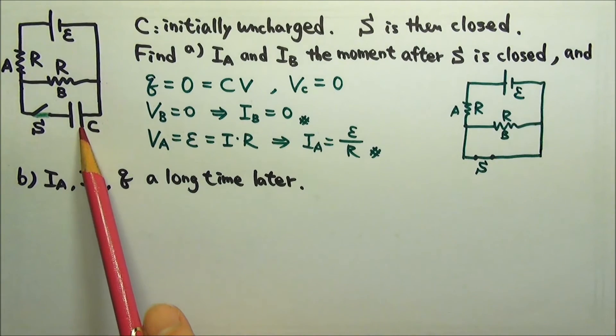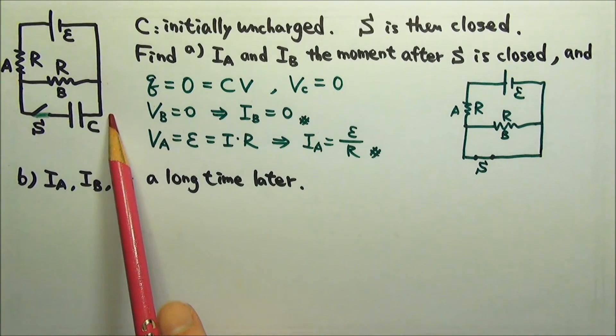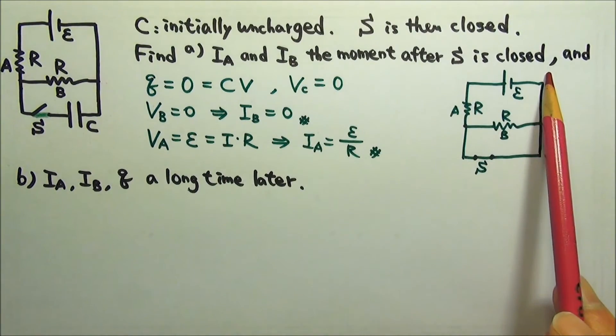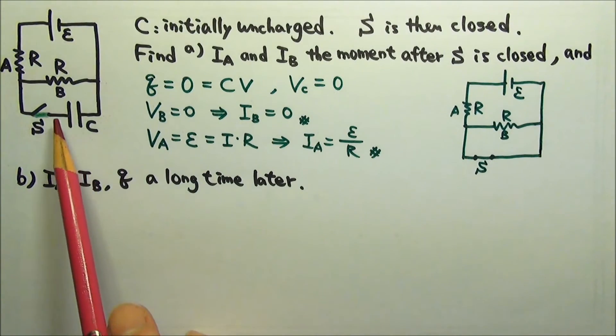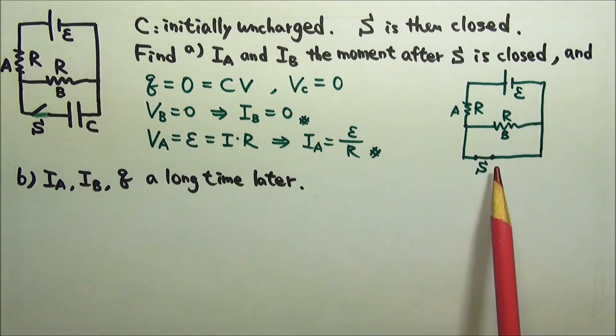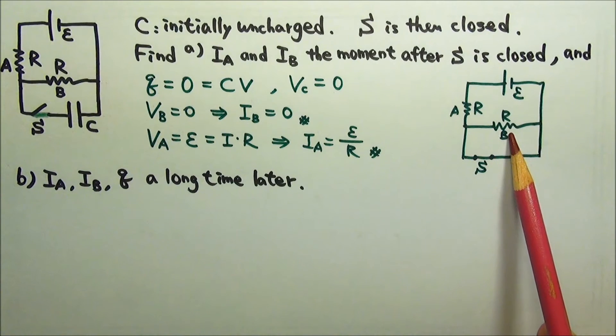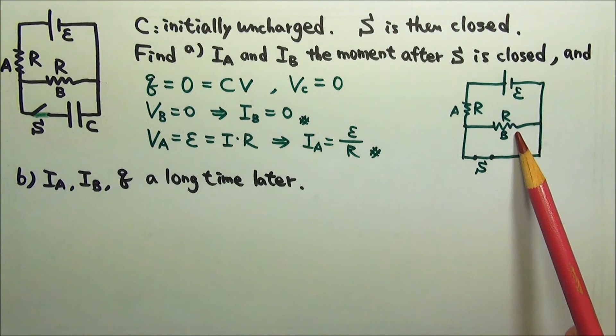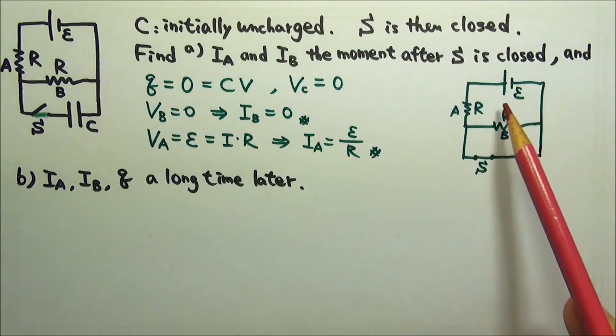In a way, because the capacitor has no charge and no voltage, it is kind of like a wire. So at this particular moment, the circuit is kind of like this. If I replace this capacitor with a wire, the voltage across would still be zero, just like the capacitor. This wire shorts resistor B out, so B gets no current. The current only flows through this part, so the current in A is E over R.